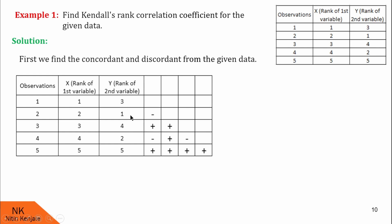Next we keep 1 fixed and compare remaining numbers with 1. Since all the other numbers are greater than 1, we put plus, plus, plus here. Next we fix number 4 and compare the other ranks with 4. Since 2 is less than 4, we put a minus sign here; and 5 is greater than 4, so we put a plus sign here. Next, we fix number 2 and compare rank 5 with it. Since rank 5 is greater than 2, we put a plus sign here.